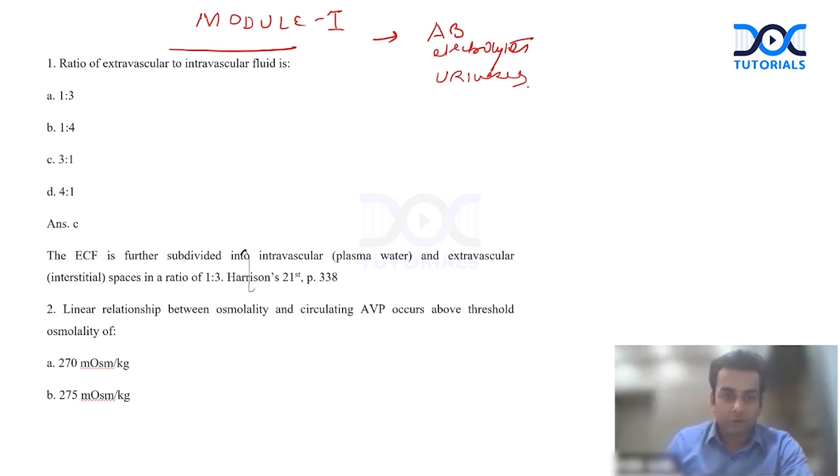The very first question was that the ratio of extravascular to intravascular fluid is dash. The answer to this question is 3 is to 1. The extracellular fluid is further divided into intravascular and extravascular. The intravascular fluid is only one proportion and the extravascular is three proportion. So the answer of extravascular to intravascular is 3 is to 1.